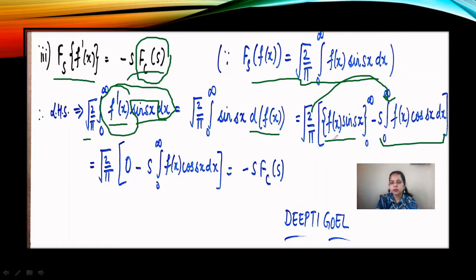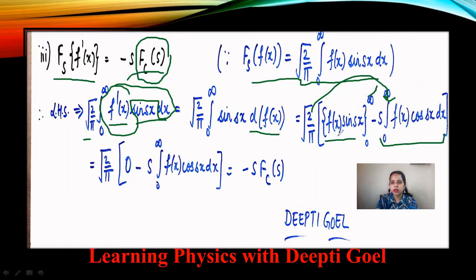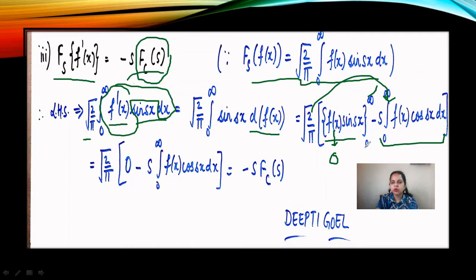Since f(x) tends to 0 as x tends to infinity, on the upper limit the first part of the integral is 0. On the lower limit when x equals 0, sin(s·0) equals 0, so the first part of the integral vanishes for both limits. We are left with 0 minus s times integral 0 to infinity of f(x) cos(sx) dx, which is the definition of the Fourier Cosine Transform. We therefore get the result as minus s times the Fourier Cosine Transform of f.